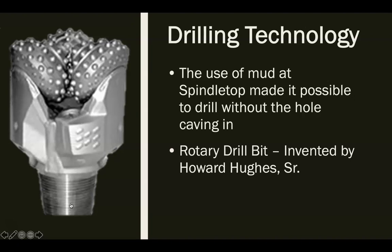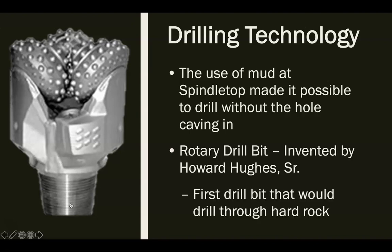A rotary drill bit was invented by a man named Howard Hughes Sr. A normal drill bit is not good for drilling for oil — what they need is something that will go down and chew up the ground. The rotary drill bit has three heads that all turn and mesh together like gears, and they can literally chew through rock. They eventually learned to make drill bits with diamond heads, because diamonds are the hardest material there is and a diamond-tipped drill bit will cut through almost anything. The rotary drill bit was the first drill bit that could drill through hard rock.